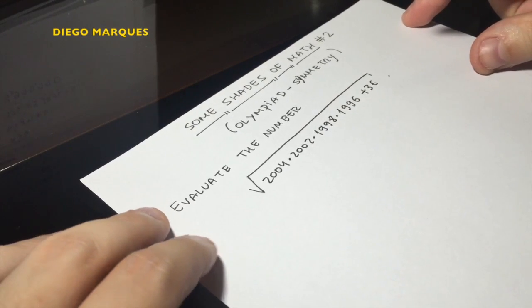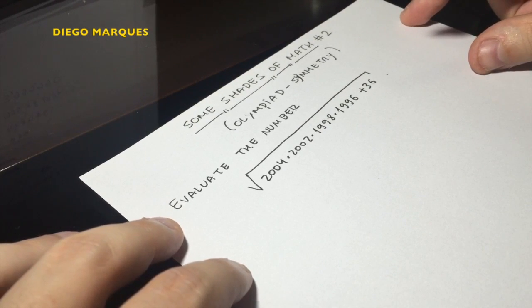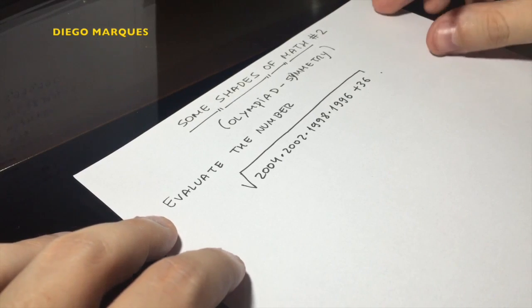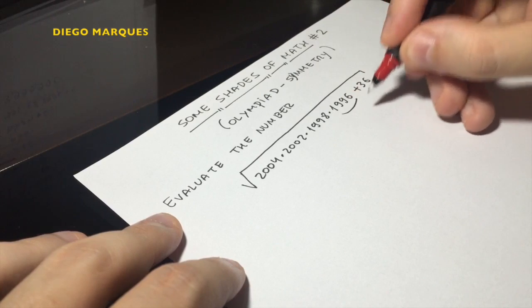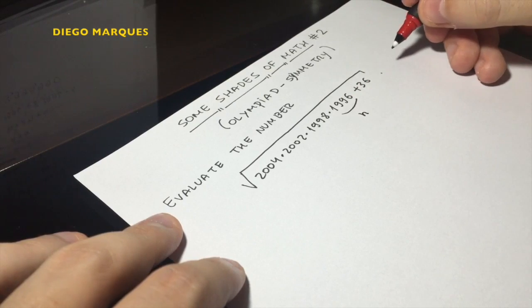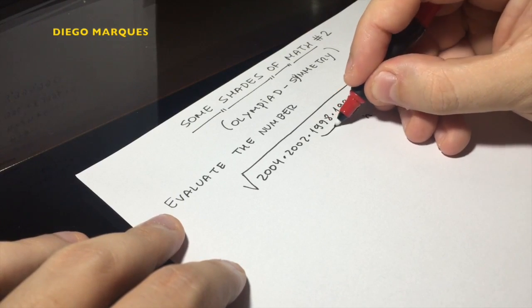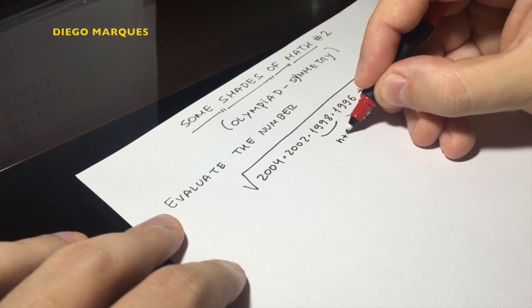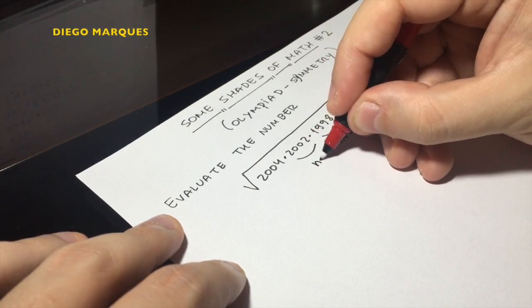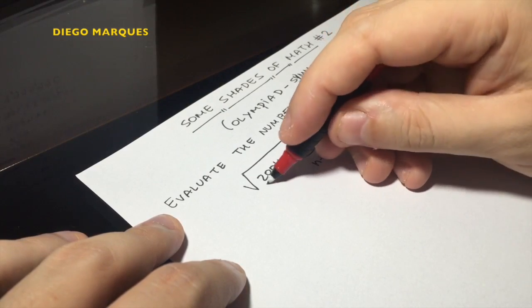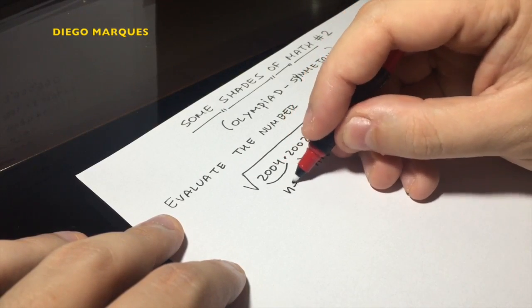Okay, so what's the idea for solving this kind of problem? Usually, we need to do the following. We call this number the smaller number n, so this guy will be n plus 2, this guy will be n plus 6, and this guy will be n plus 8.